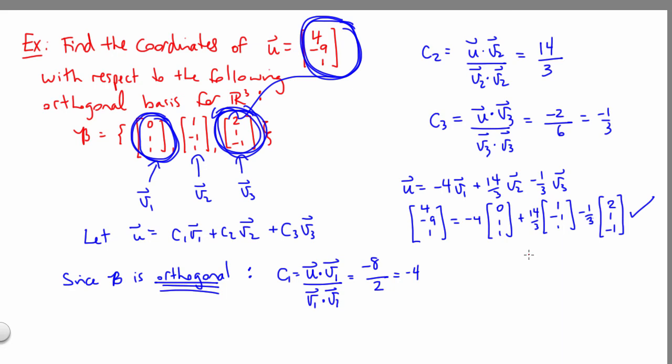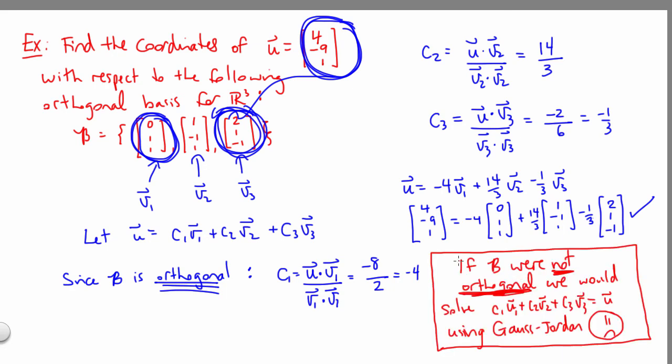I'd like to point out that if our basis were not orthogonal, we would solve that system of equations C1 v1 plus C2 v2 plus C3 v3 equals u using Gauss-Jordan elimination. That would usually be a much longer, more involved process.